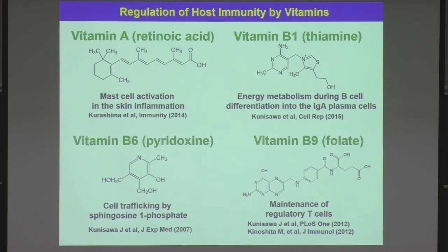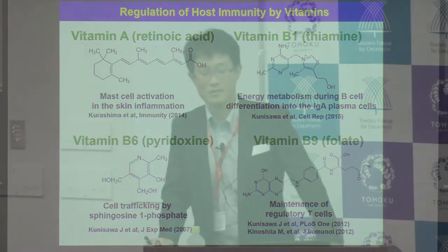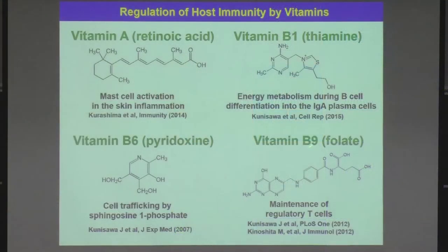Another example of dietary materials affecting host immune responses is vitamins. Of course, vitamins are essential nutrients that we must take from the diet. But also, commensal bacteria can produce vitamins and simultaneously consume them, so the type of commensal bacteria affects the necessity for dietary vitamins. We also found that vitamins are essential factors for controlling host immune responses — specific vitamins have specific functions to control specific immune responses. Using vitamin A and vitamin B families, my group has reported that several vitamins play an important role in this control.